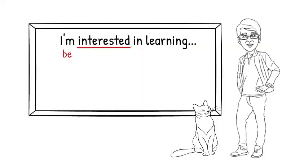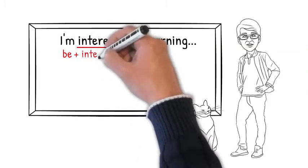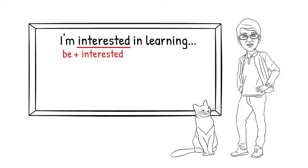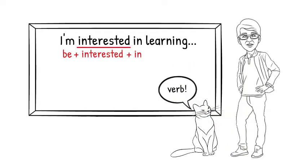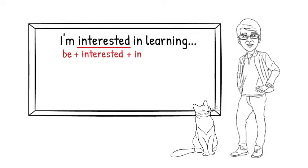It starts with the verb be, and then our word interested, plus the preposition in, and then, well, let's make it a little test. What comes next? That's a common mistake. It looks just like a verb, but it's not.